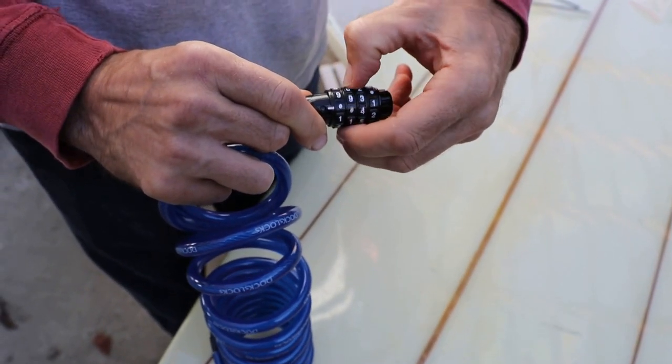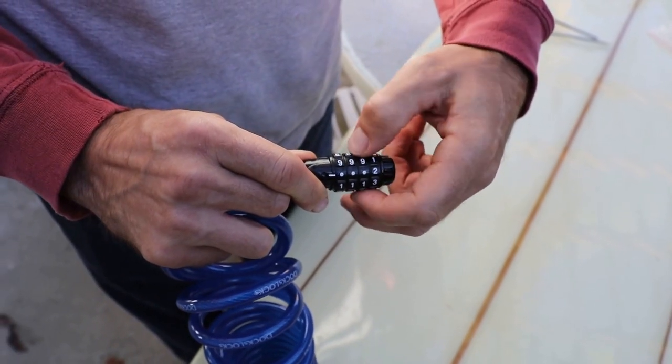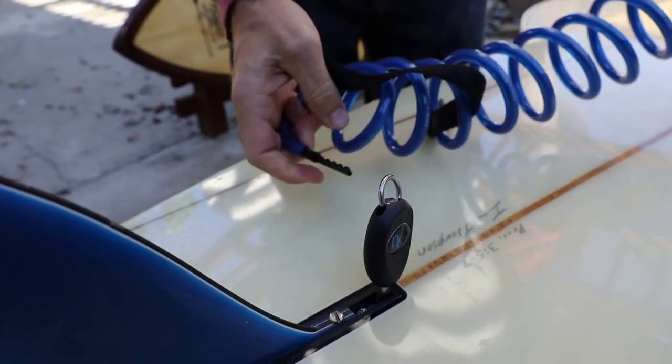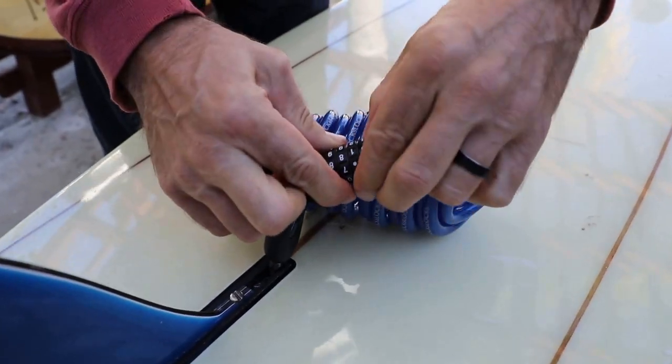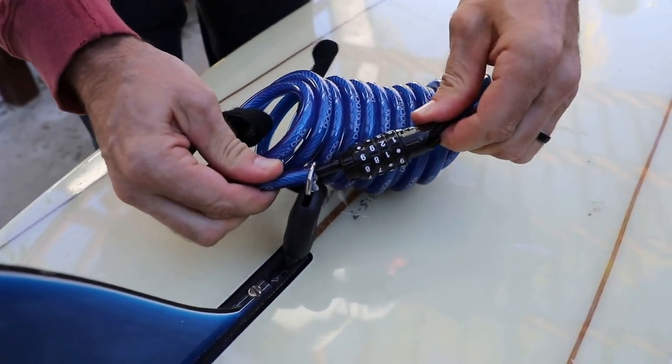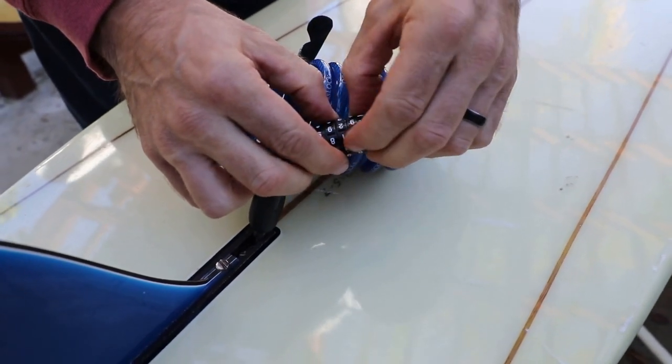And then once you get your numbers picked and set, you're going to turn it back into the clockwise position. Once you've done that, you can feed it through and you'll see that it goes and locks tight. And that's how you can quickly get your lock set.